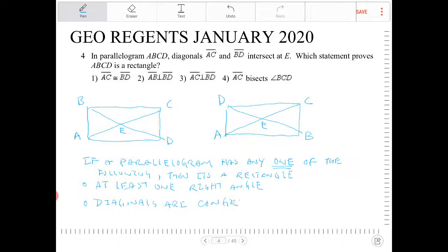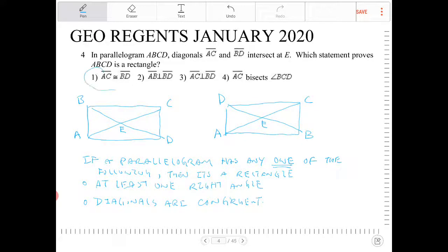So, which is it here? Looking at this, AC and BD are congruent. That's the first one.